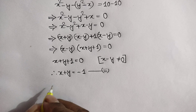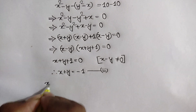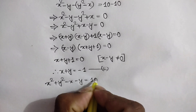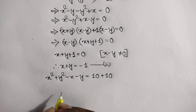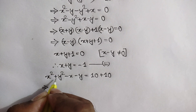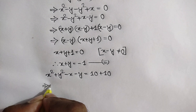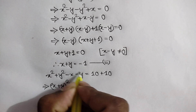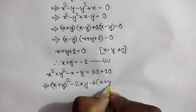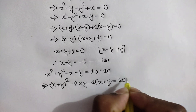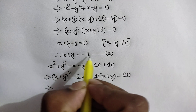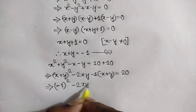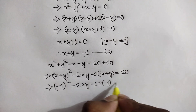Now, adding equation number 1 and equation number 2, we get x squared plus y squared minus x minus y equals 20. We can apply the identity a squared plus b squared equals x plus y whole squared minus 2xy, and for the last two terms take out minus 1, giving x plus y. Substituting x plus y equals minus 1 from equation number 3, we write minus 1 whole squared minus 2xy minus 1 times minus 1 equals 20.